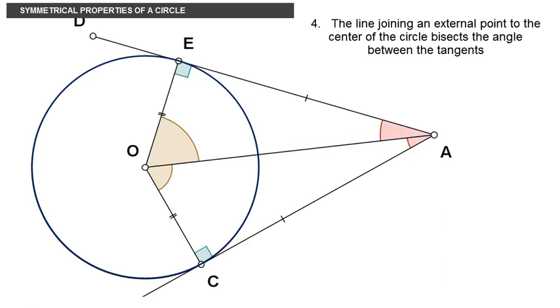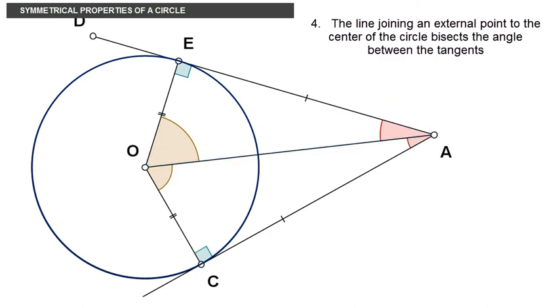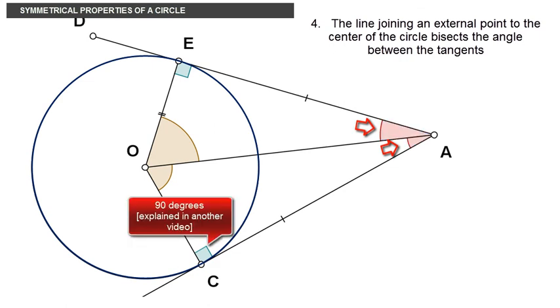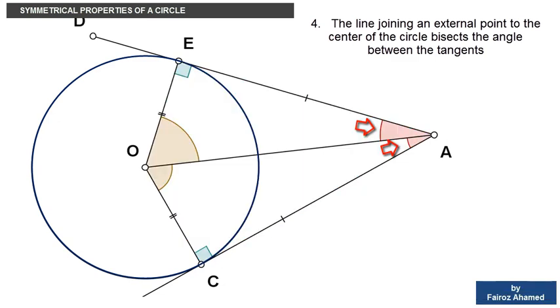The fourth property states that this line which connects the external point A to the center of the circle bisects, which means divides into two, the angle between the tangents which is EAC. Therefore, EAO and CAO are equal. As a result of this the triangles AOE and AOC are similar and therefore the angles EOA and COA are equal as well.